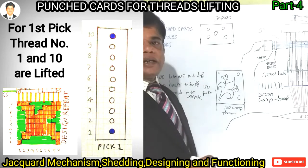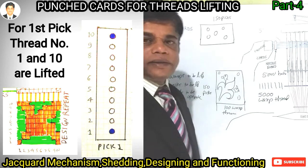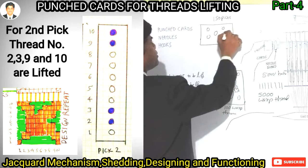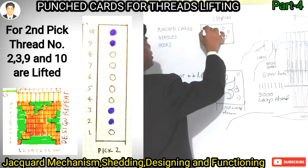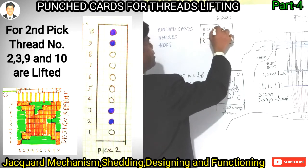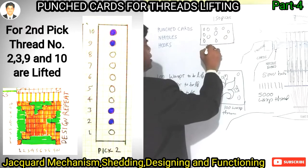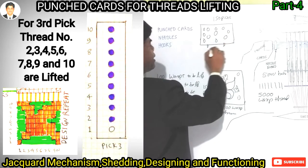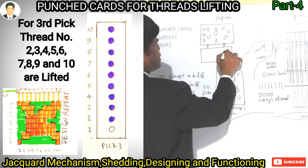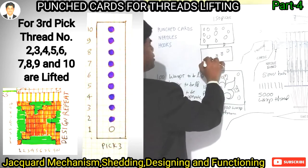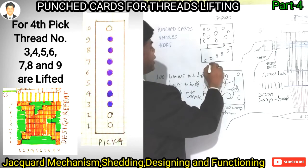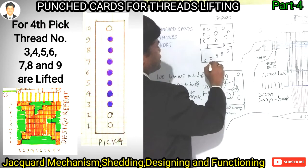There is a pattern in the punching. This is one pick — in one pick, this is the first thread, second thread. This is one card. This card is connected to the second card, or the second pick. This design is different for each card. This is the second card, then the third card — they are all linked together.